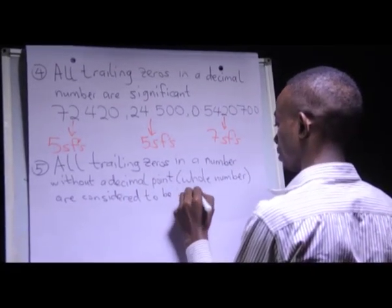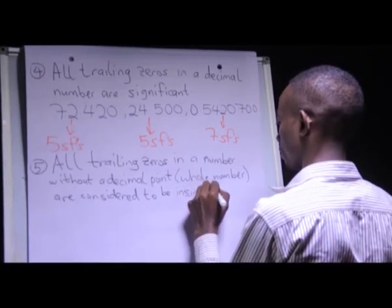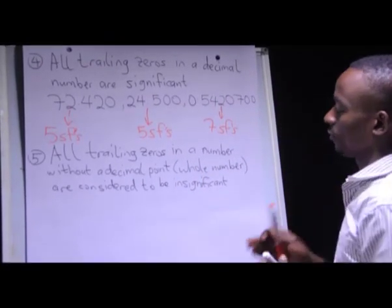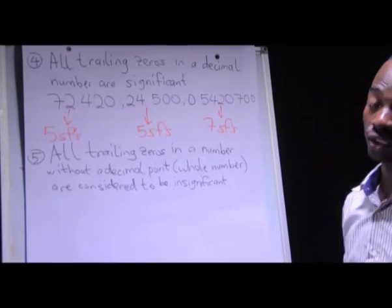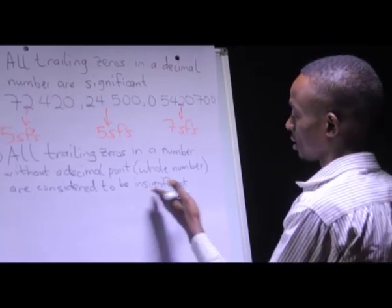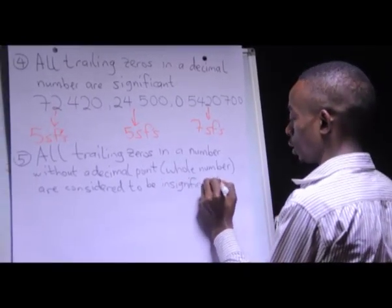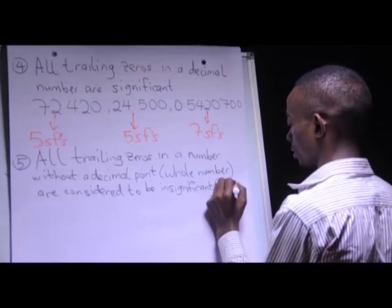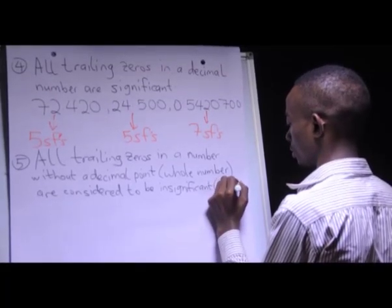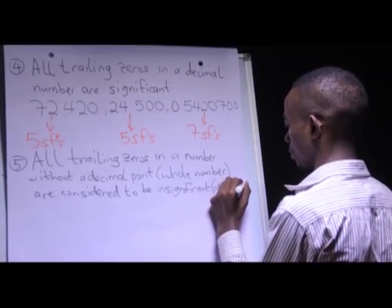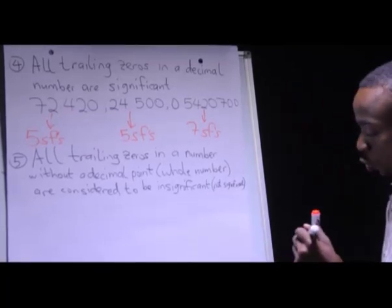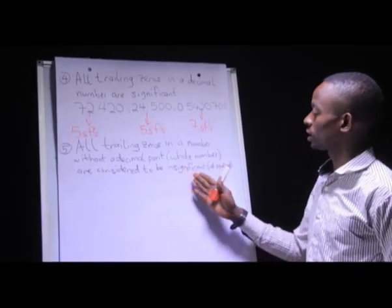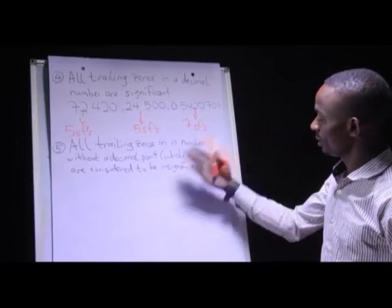Insignificant is the opposite of significant, so when I say insignificant I mean not significant. So all trailing zeros in a whole number are considered to be insignificant.